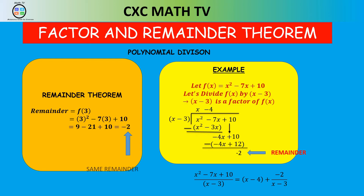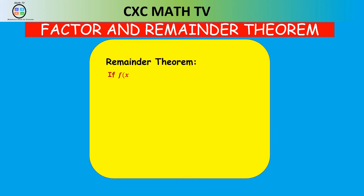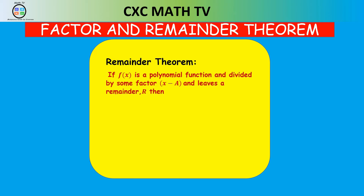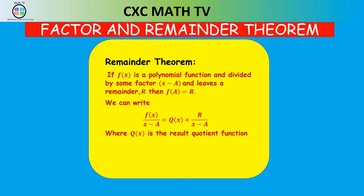So what is the remainder theorem? Without having to do all of that long division, this is remainder theorem: if f(x) is a polynomial function and we divide it by some factor (x - a), it's going to leave a remainder r, then f(a) = r. We can write this as: f(x) divided by (x - a) equals the quotient q(x) plus r over (x - a), where r is the remainder. So all we need to remember is: if you divide a function by (x - a) and it leaves a remainder of r, then f(a) = r.